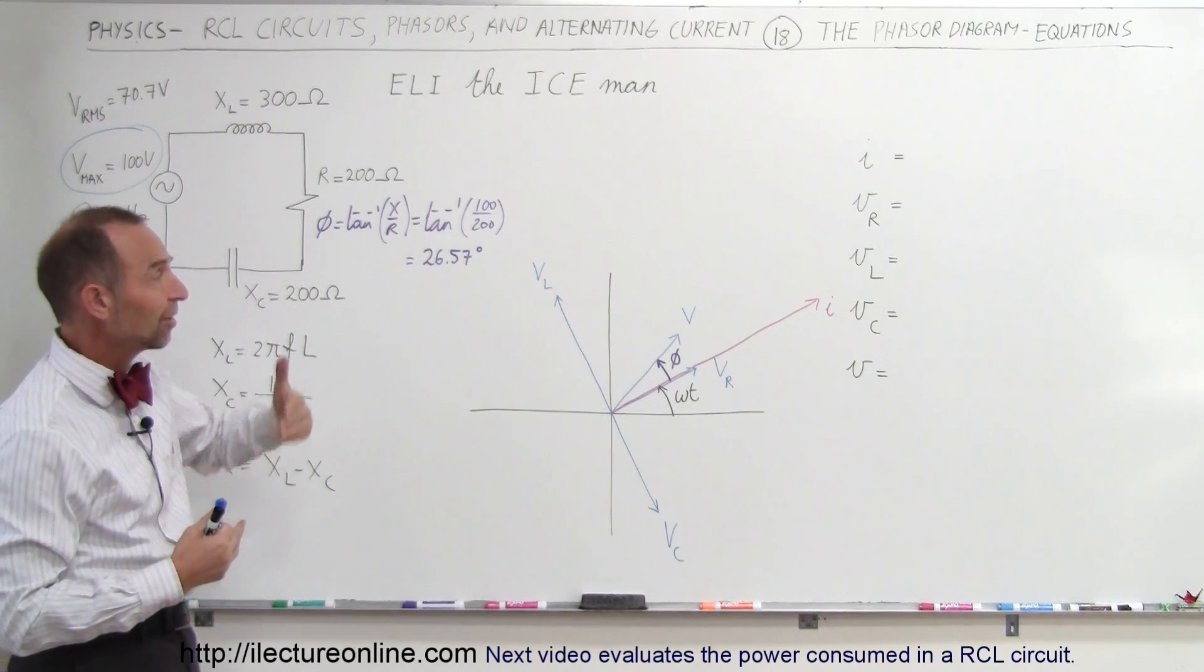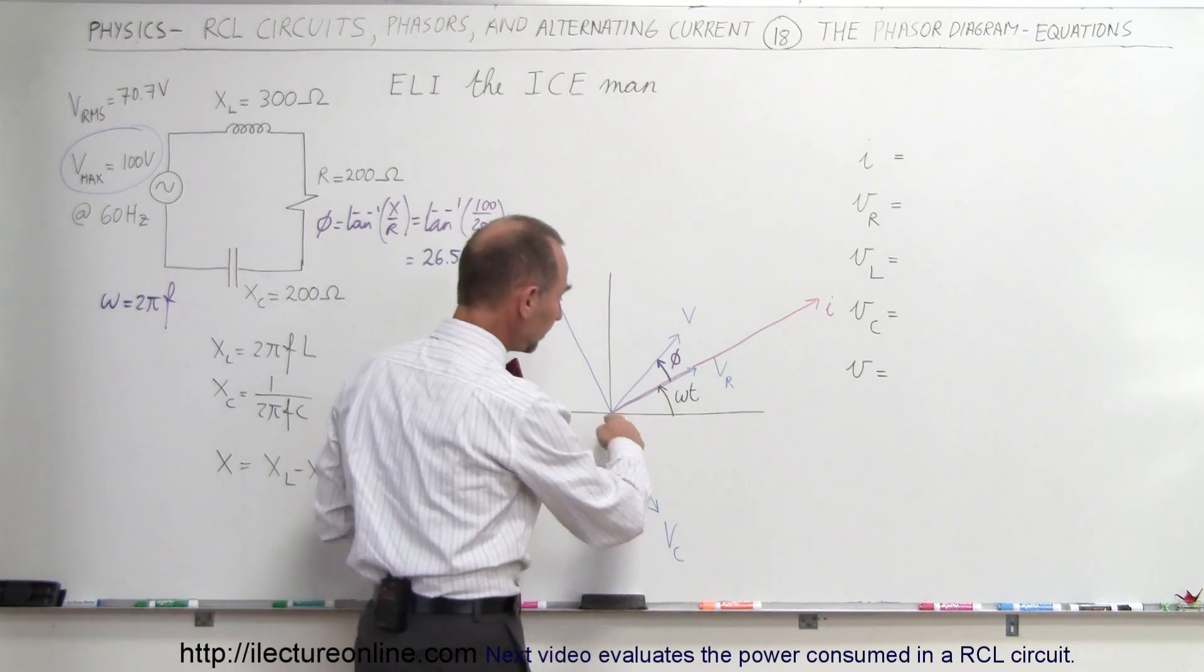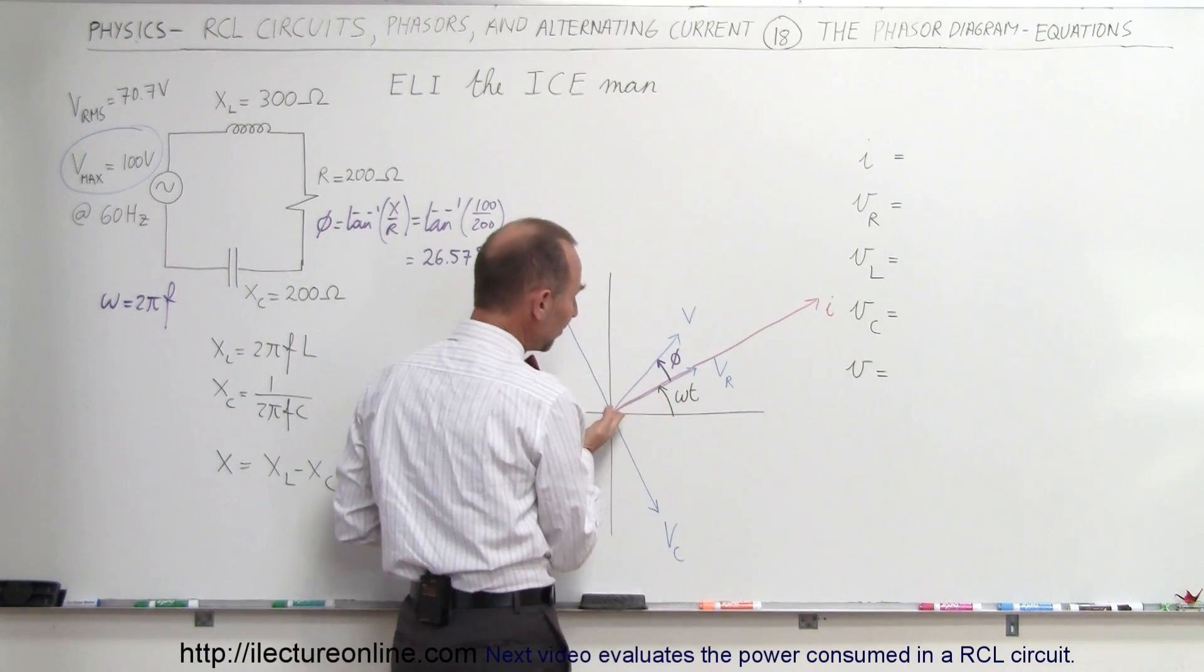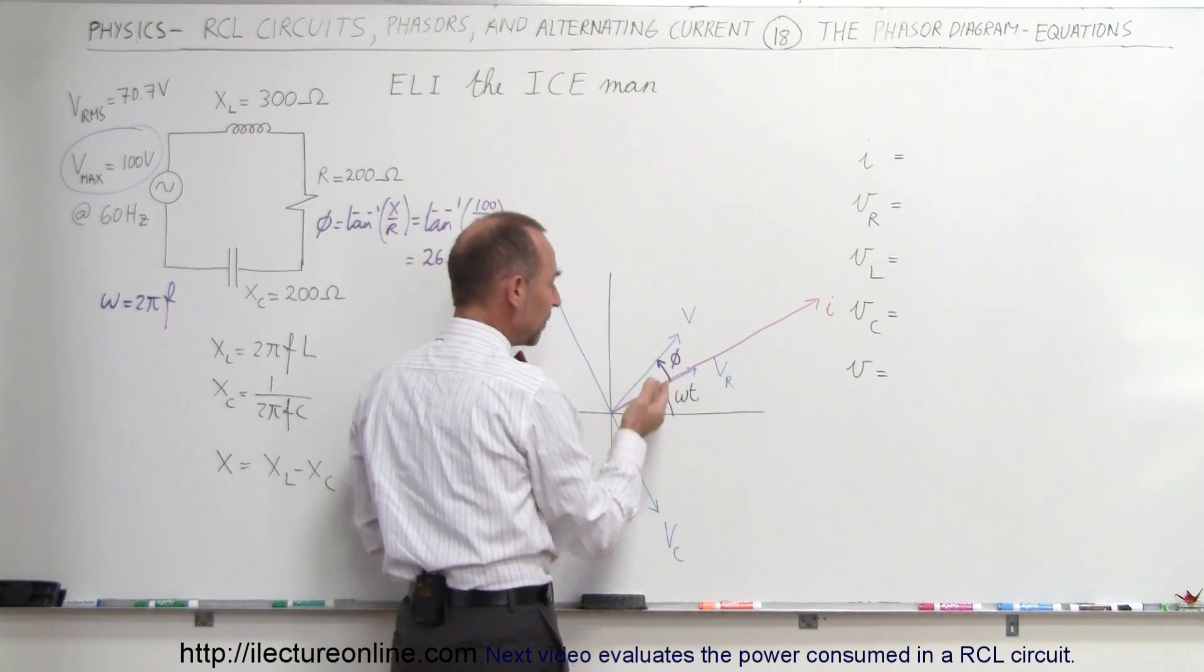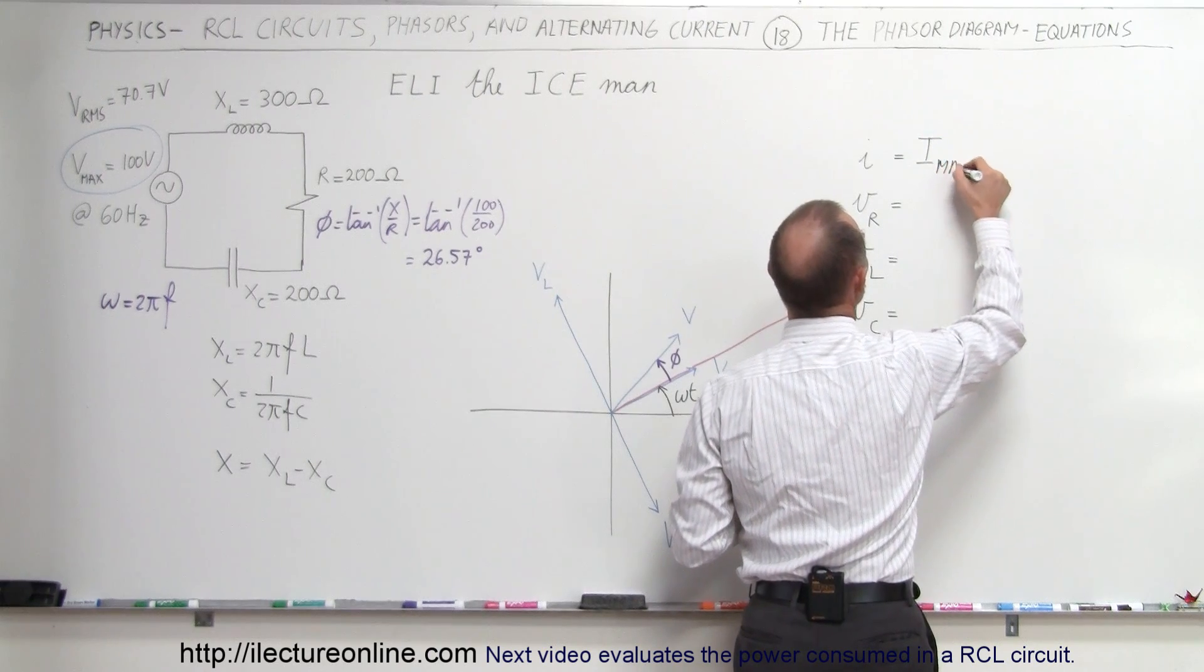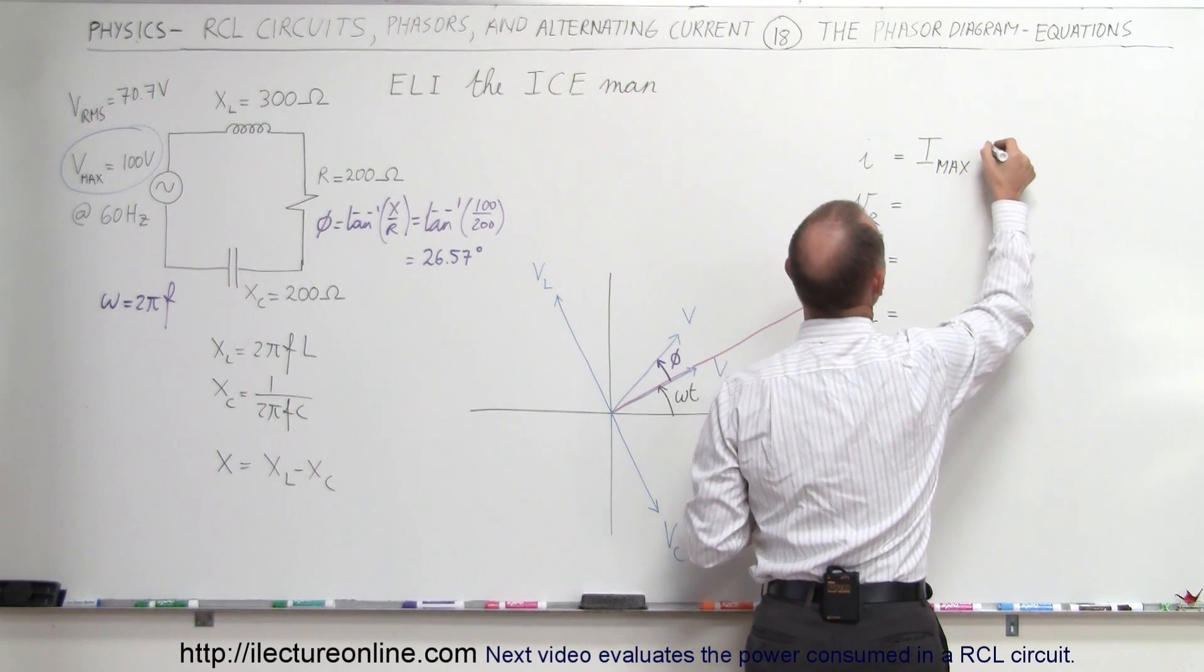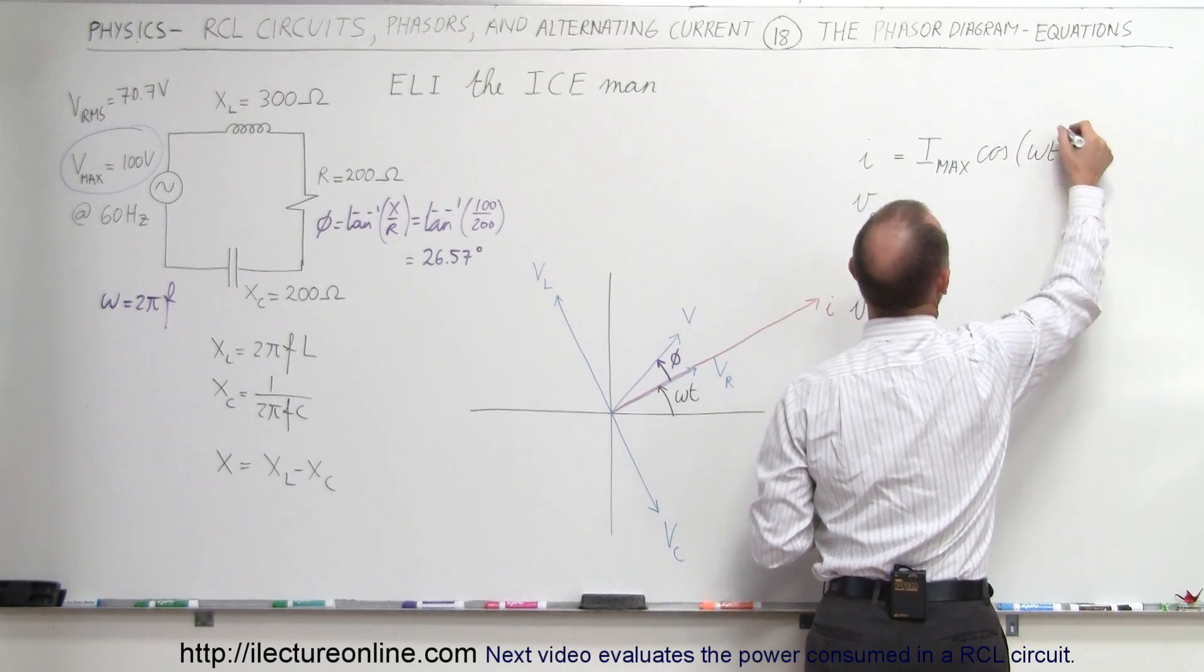So what are the equations that represent the current and the voltages in the circuit? Well, the current is right here. The current is always in phase with the voltage across the resistor. Notice they've turned through an angle of omega T, so therefore we can say that I is equal to I max, the maximum current in the circuit, times the cosine of omega T.